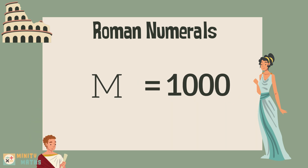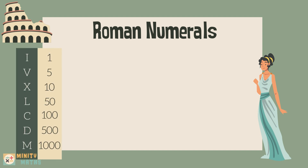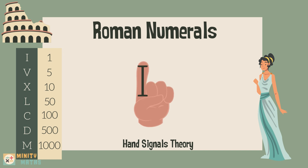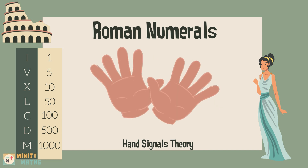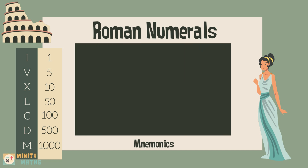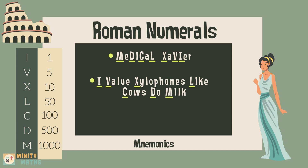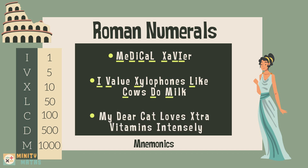There are various ways to help you remember the Roman numeral symbols. It is believed the Romans used hand signals for remembering Roman numerals up to 10. Mnemonics can also help us recall the order of Roman numerals. Here are some examples. See if you can come up with your own mnemonic to help you remember the Roman numerals, and post it in the comments below.